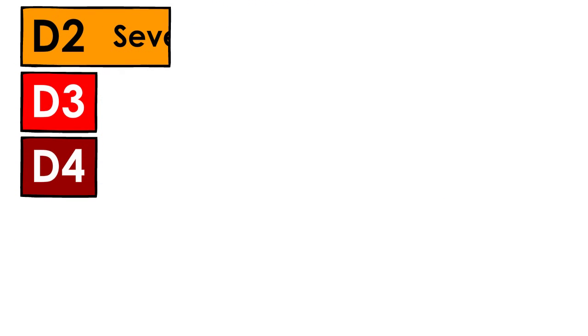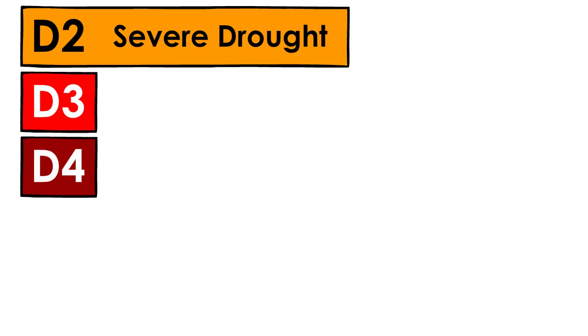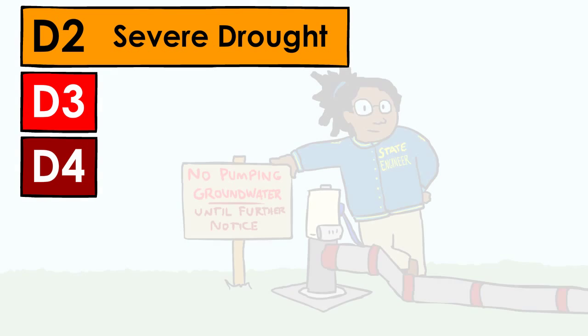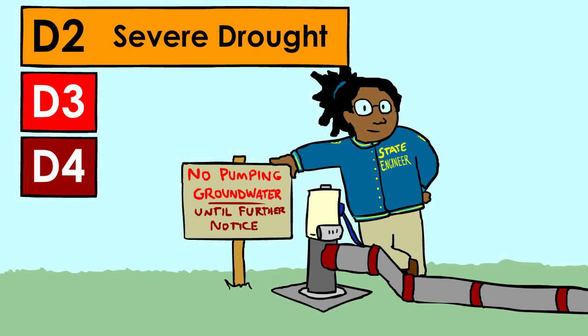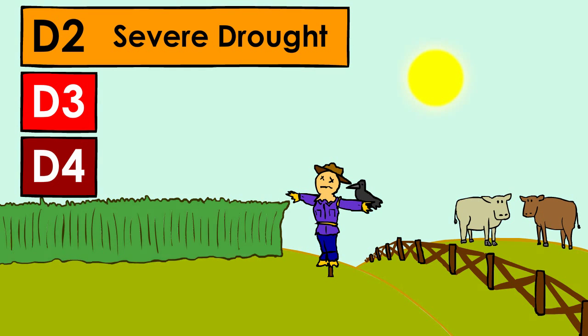D2 levels indicate severe drought. Those requests to curb water would likely move into actual water restrictions. You could expect water shortages with a good chance of damaged crops and pastures.